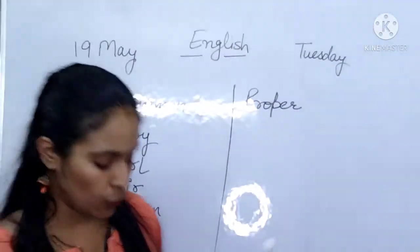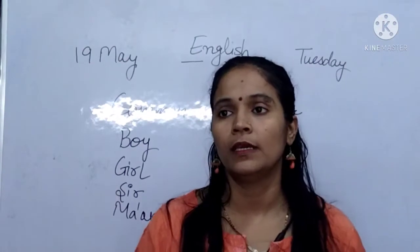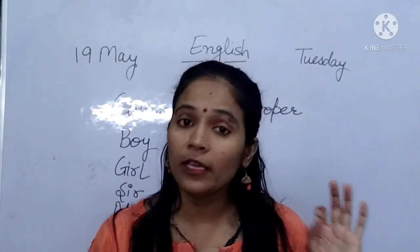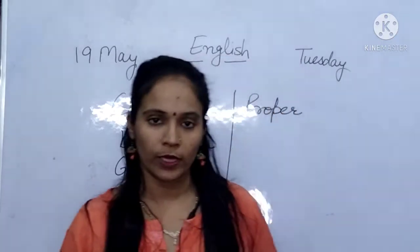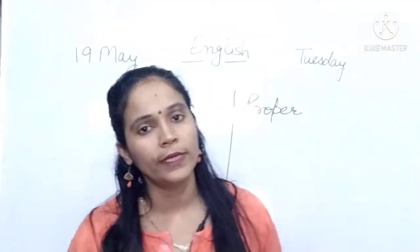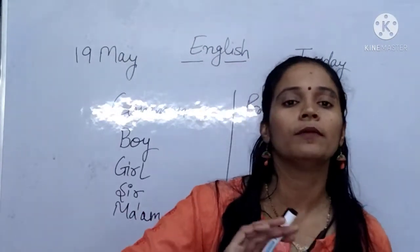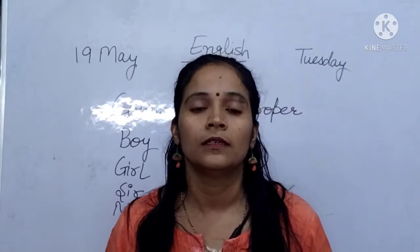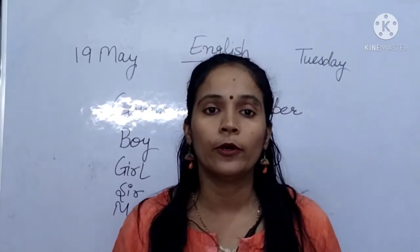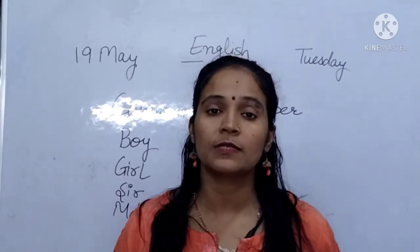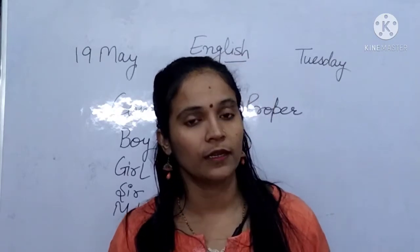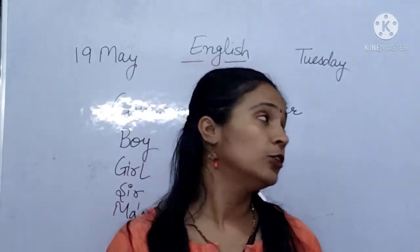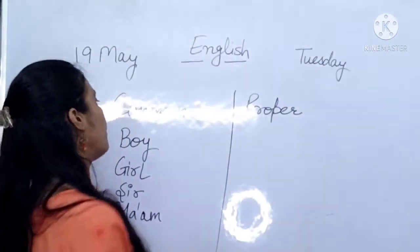Common means koi bhi boy — koi bhi boy kahte hai. Like: he is a very good boy — so 'boy' is a common noun. And if we specifically mention someone's name — like Deshariya is a very good boy — then it means a special name has come, a proper name of a child. So it is a proper noun.